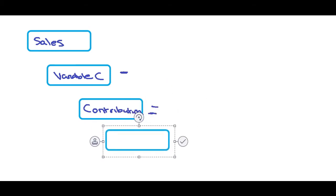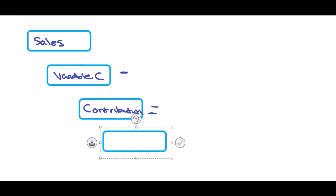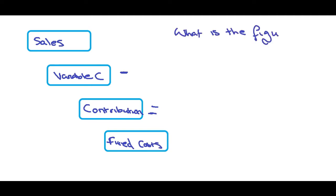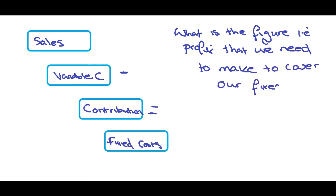The reason that we want to work out what the contribution is, is because we have fixed cost. So we want to know what is the figure, almost a profit, but what is the figure, the amount that we need to make to cover our fixed costs.